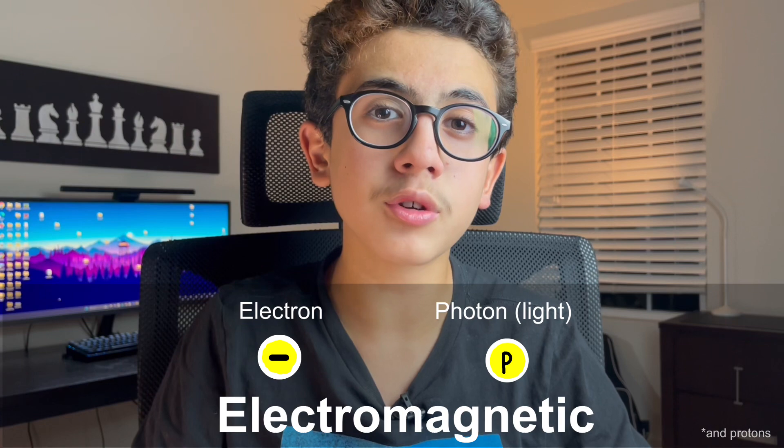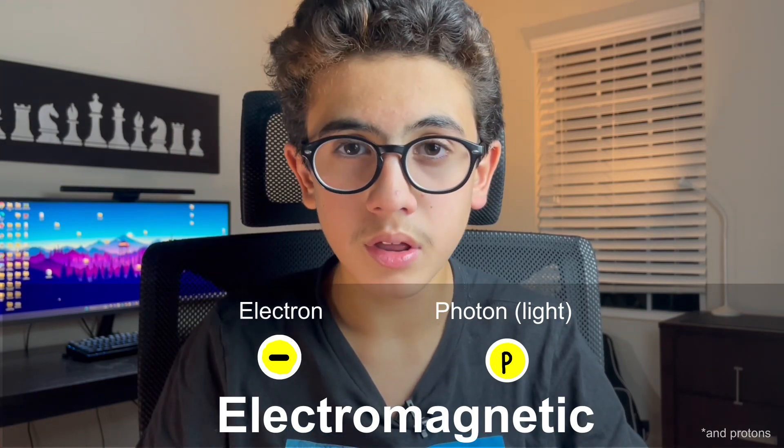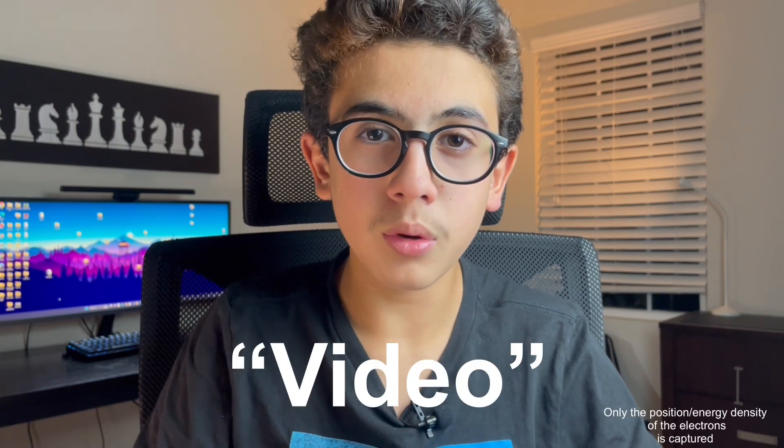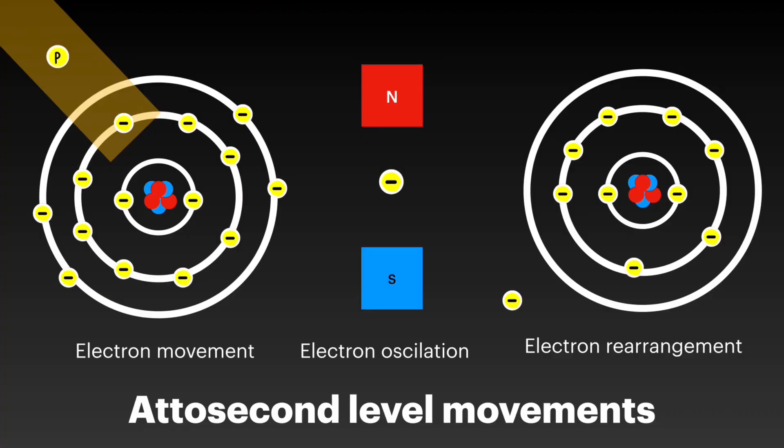This is because most electromagnetic interactions occur on the attosecond timescale. This means that using attosecond pulses of light, we can now video the motion of electrons. This includes the rearrangement of electrons and therefore charges inside the atom, electrons being excited by photons, and lots more.